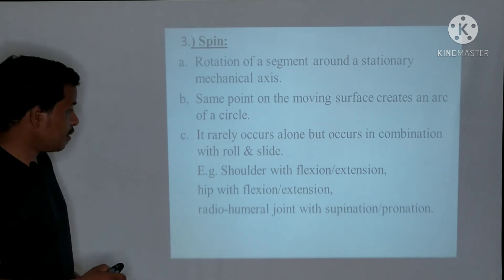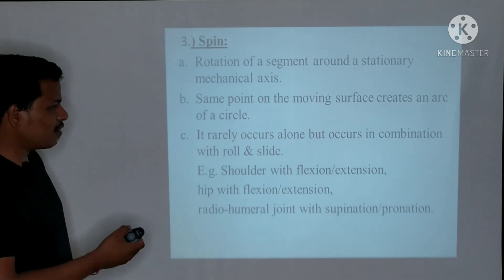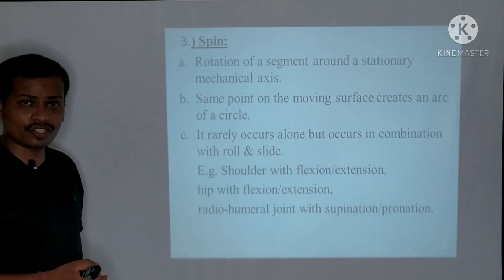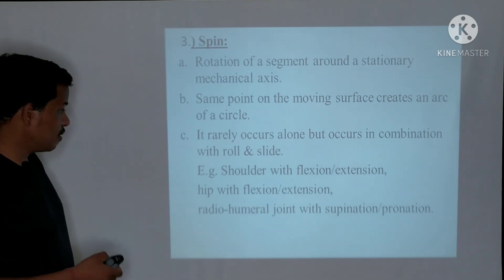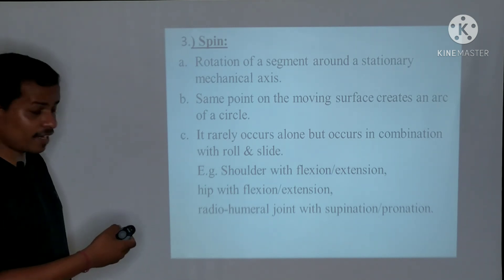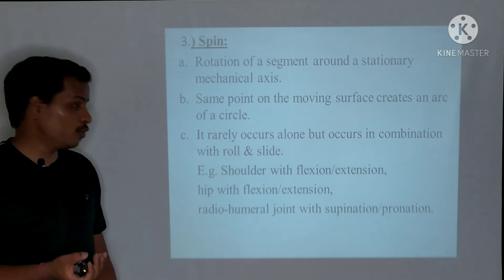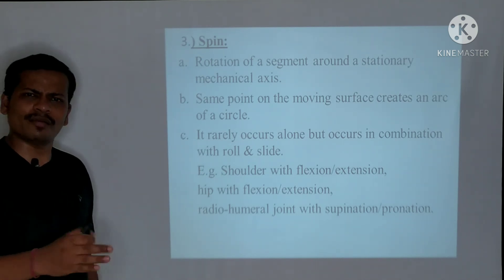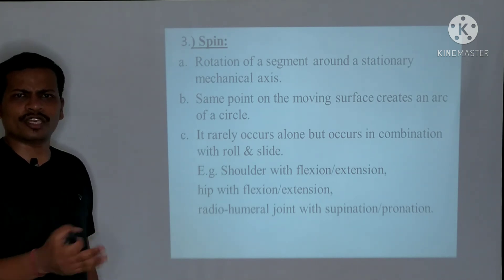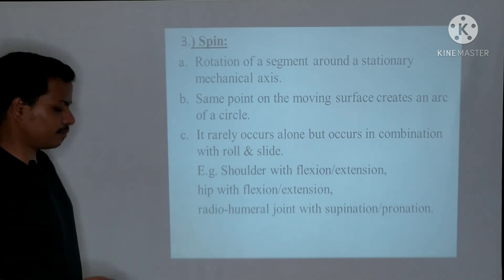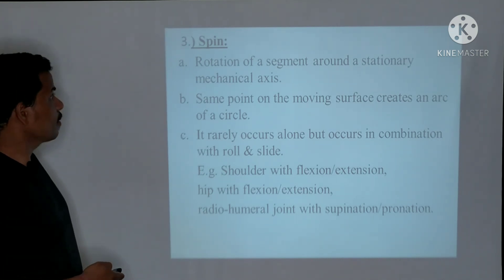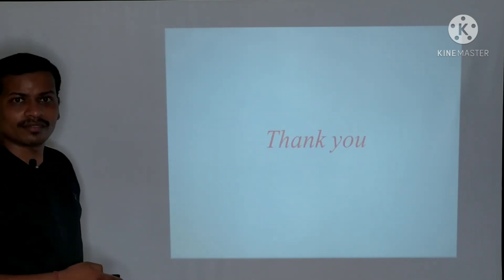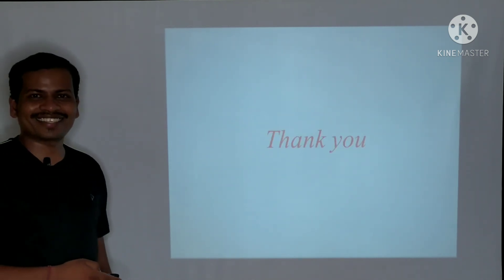Examples of spin include: the shoulder joint during flexion and extension, the hip joint during flexion and extension, and the radiohumeral joint during supination and pronation. Thank you.